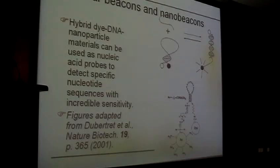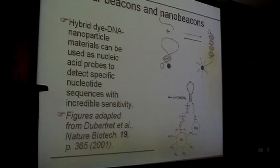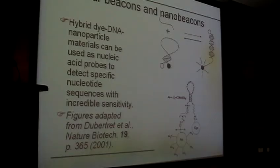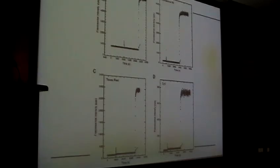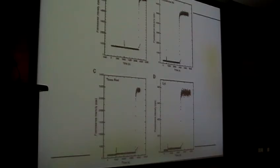If we replace the organic quencher with a gold nanoparticle, it is possible to significantly increase sensing performance. In 2001, researchers attached a stem-loop structure to the surface of a gold nanoparticle. In the stem-loop state, the dye is close to the surface and fluorescence is off. When there is a target, the fluorescence turns on. They made four probes, each with a different dye — fluorescein, rhodamine, Texas Red, and Cy5 — and in all cases received significant fluorescence increase in the presence of a specific target.